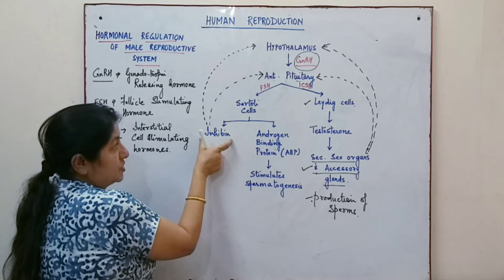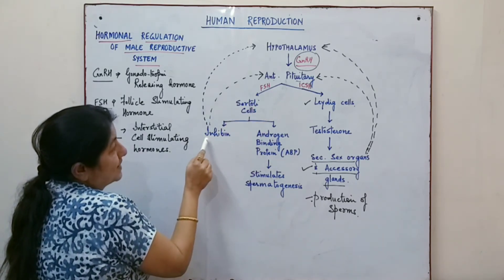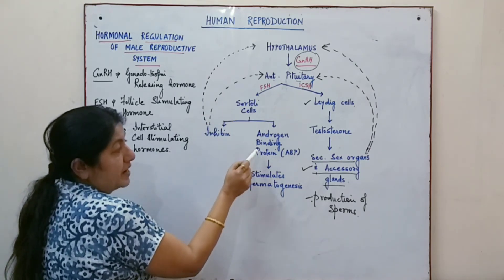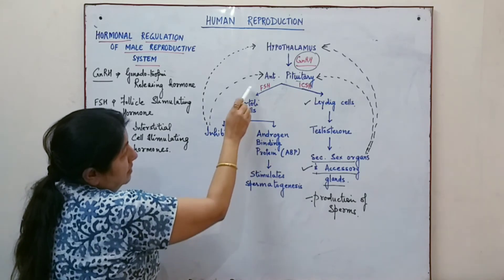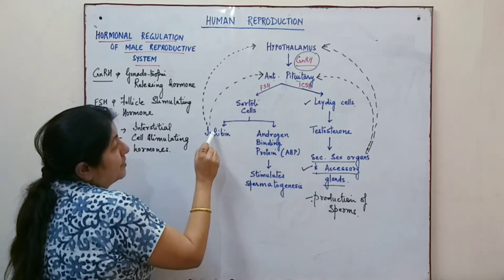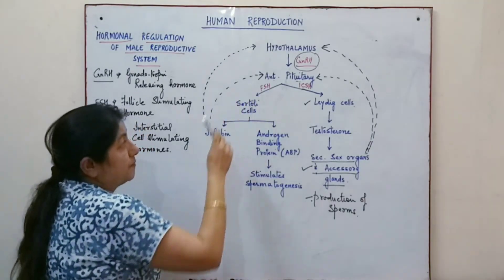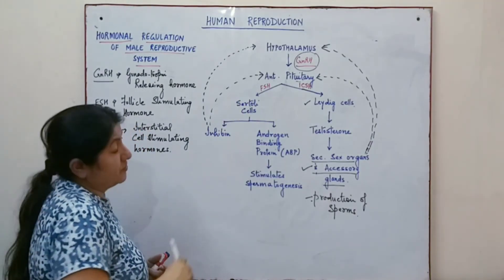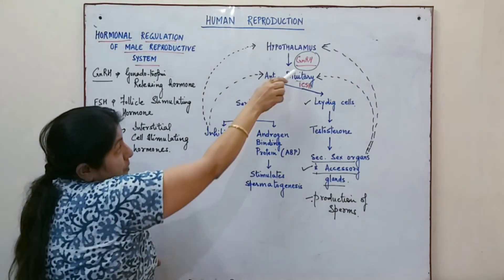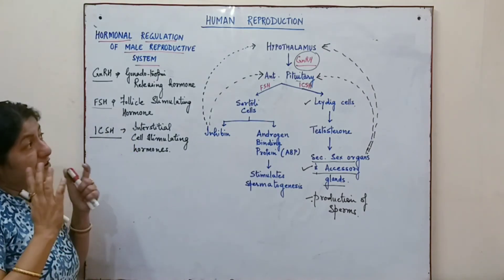The inhibin produced by Sertoli cells also sends a signal to regulate FSH production. If the amount of FSH is more, inhibin sends a signal to the anterior pituitary to stop the production of FSH, and also sends a signal to the hypothalamus to stop the production of gonadotropin releasing hormones.